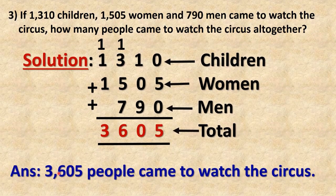Third example: If 1,310 children, 1,505 women, and 790 men came to watch the circus, how many people came to watch the circus altogether?